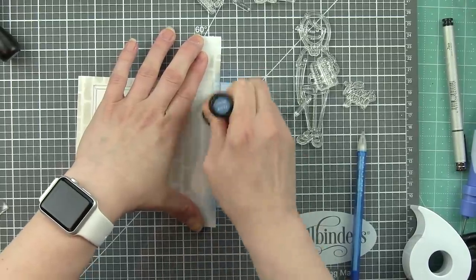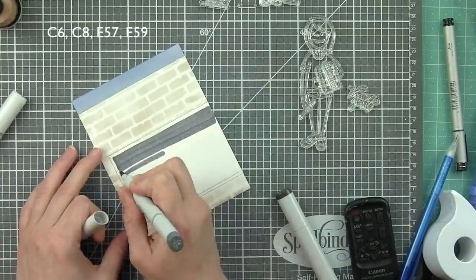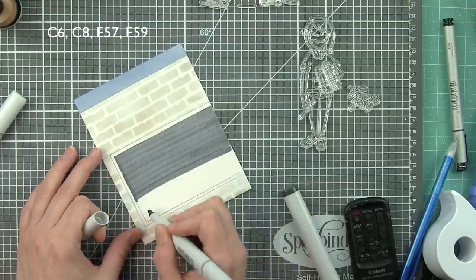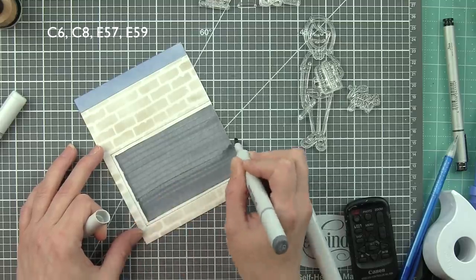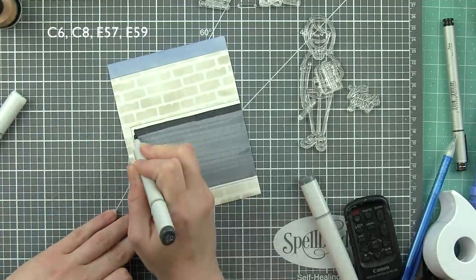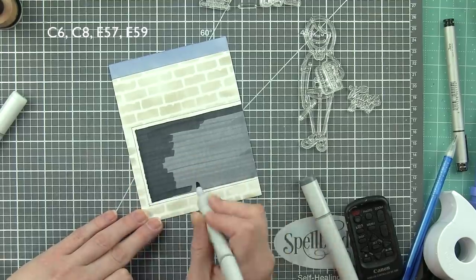One of my favorite, favorite techniques is creating the chalkboard. And I've done this with other chalkboard elements before, but it's my favorite. I like to use the chisel tip of my Copic marker to color it in. It looks awful when you start, but it really creates some fantastic results. So I colored the whole thing in with the chisel tip first of my C6 Cool Gray 6 marker.